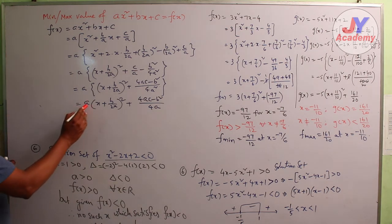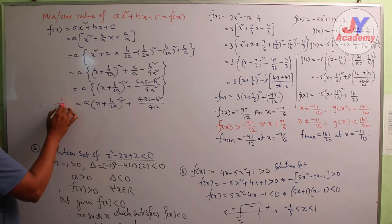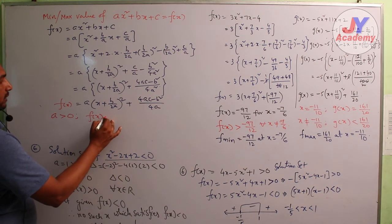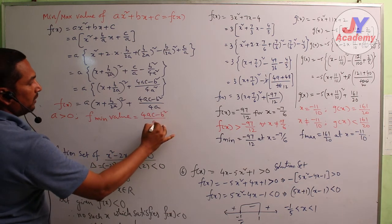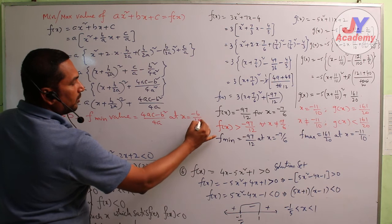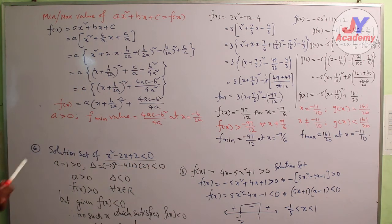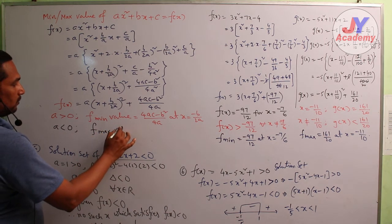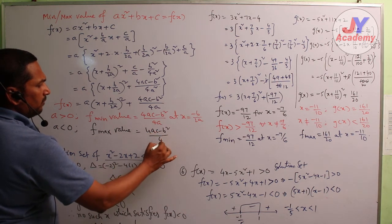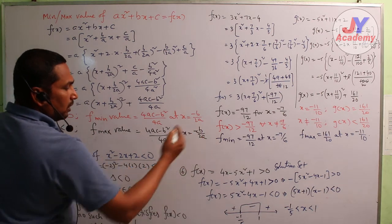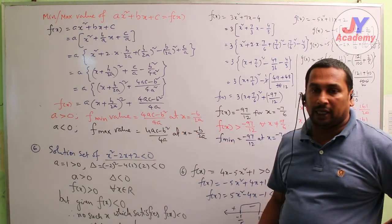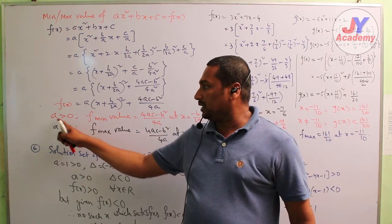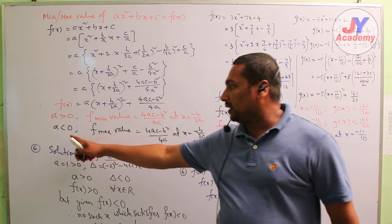Now observe: if a is positive, f minimum value = (4ac minus b²) / 4a at x = minus b/(2a). If a is less than 0, f maximum value = (4ac minus b²) / 4a at x = minus b/(2a). Both minimum and maximum have the same formula: (4ac minus b²) / 4a. When it is minimum: x² coefficient positive. When it is maximum: x² coefficient negative.